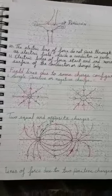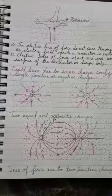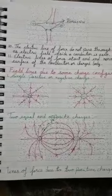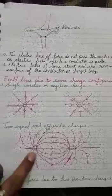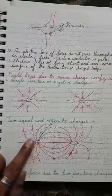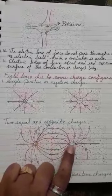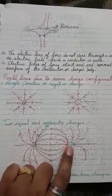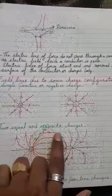This is a dipole because here we have a positive and negative charge. 'Di' means two and 'poles' means — like north and south — so for this dipole, from the positive charge, electric field lines always go outside. You can see that all electric field lines go outside from positive charge, and for the negative charge, electric field lines are always inward.